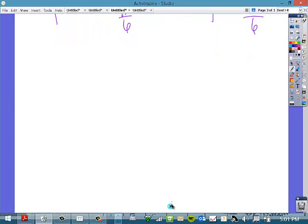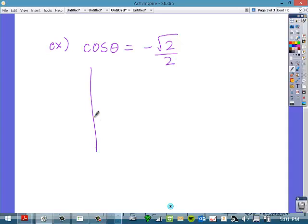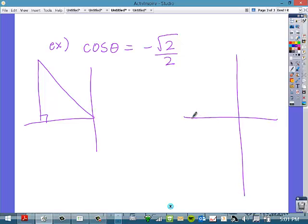Our next example is cosine of theta equals negative root 2 over 2. So, we have to figure out which quadrants is cosine negative in. Cosine is negative in the second quadrant, and cosine is negative in the third quadrant.